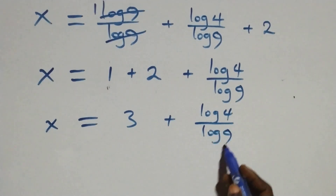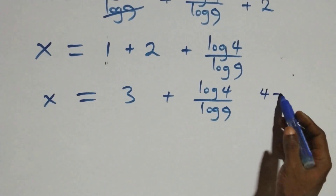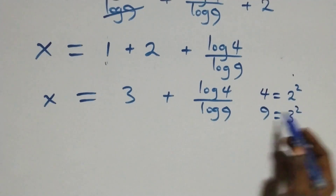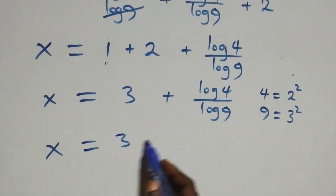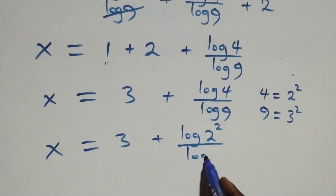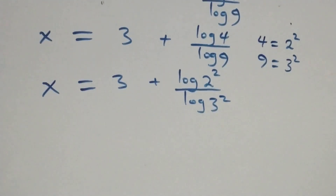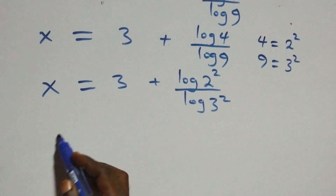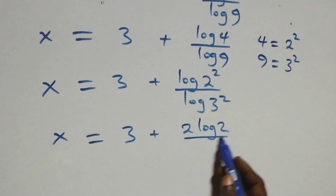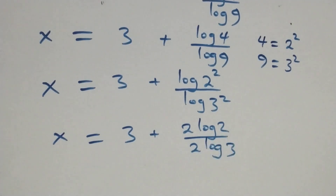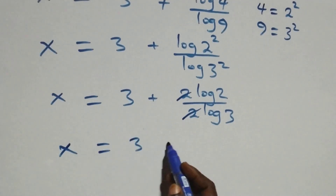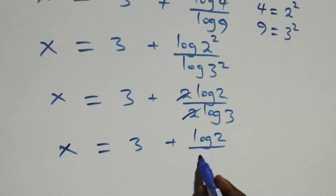We can write 4 as 2 times 2, which is 2 squared, and 9 as 3 times 3, which is 3 squared. What we have becomes x equals 3 plus log 2 squared over log 3 squared. Applying the power rule, two comes down from each, giving x equals 3 plus 2 log 2 over 2 log 3. The twos cancel, and we have x equals 3 plus log 2 over log 3.